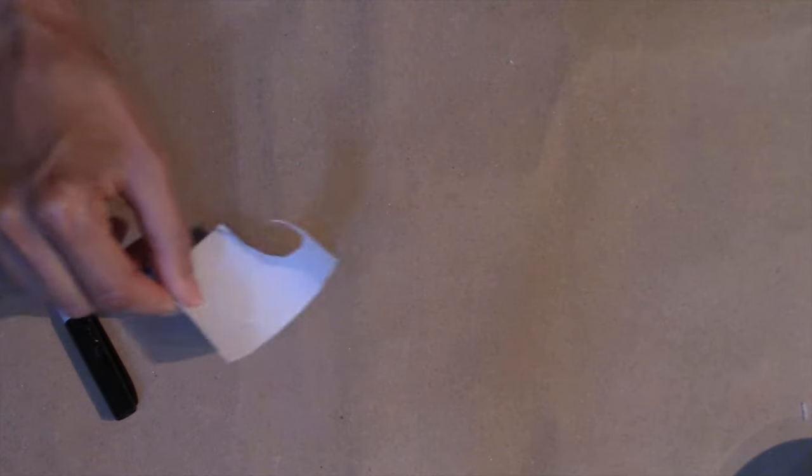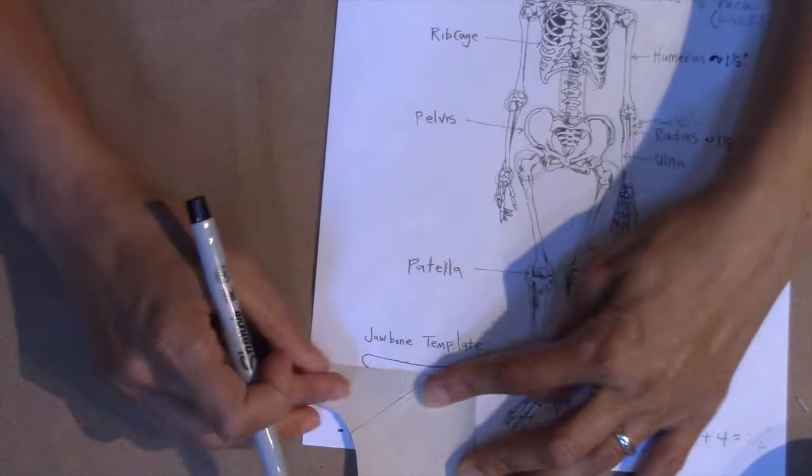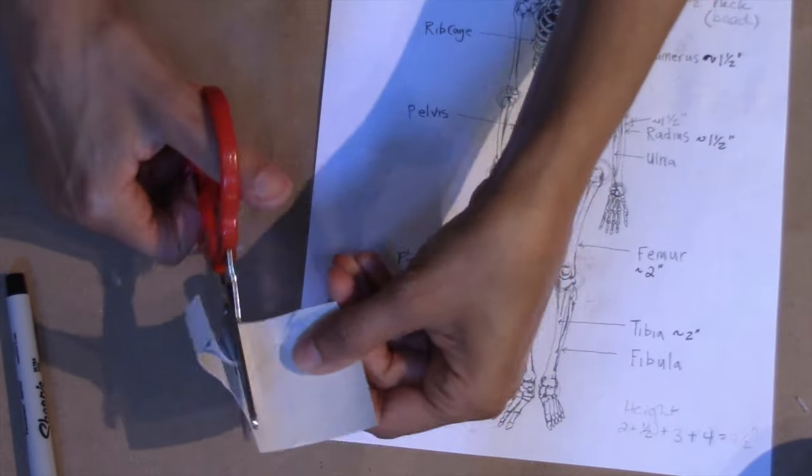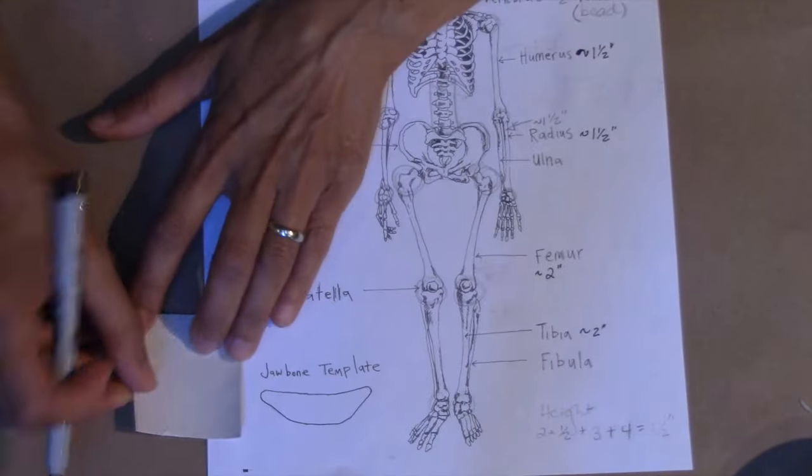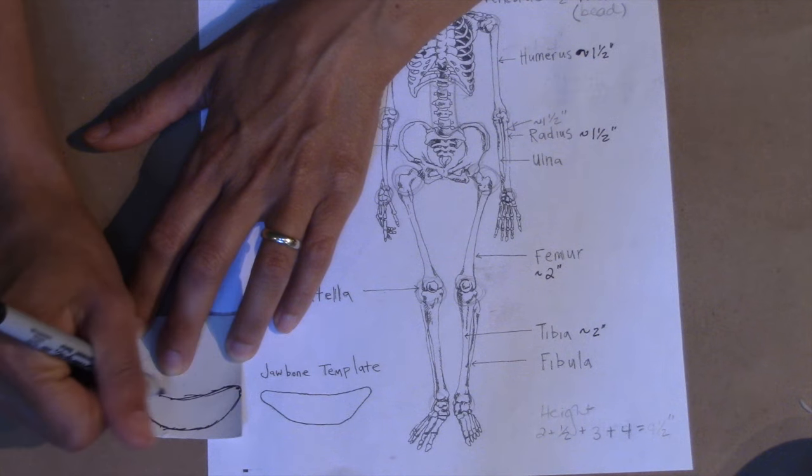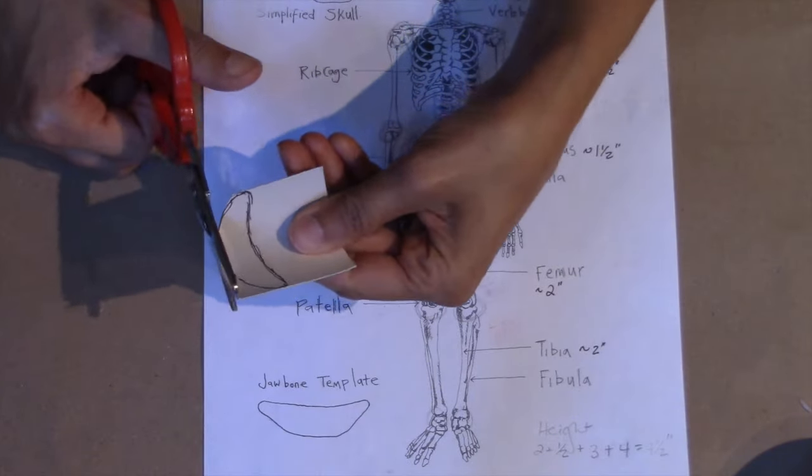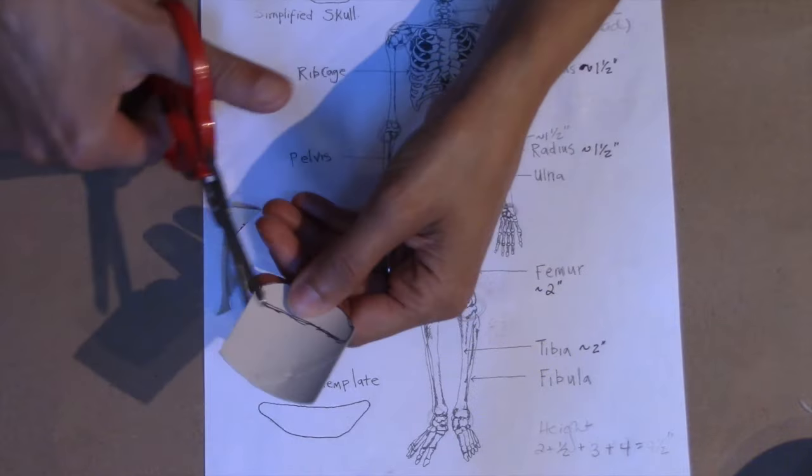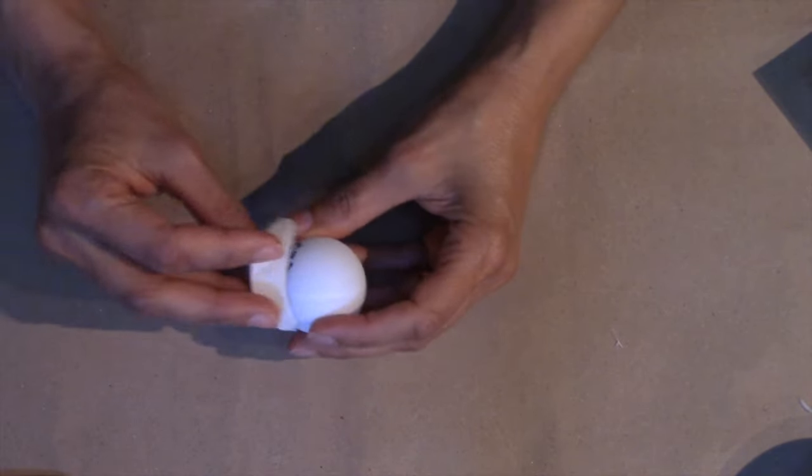For the head I'm using a ping pong ball and a piece of cardboard for the jawbone. If you're making a regular marionette you can skip the jawbone and just use the ping pong ball or use a large wooden bead or maybe even an empty eggshell that's been coated with varnish. I have a video that shows you how to prepare an eggshell that I will link in the description. Just like we did with the pelvic bone, you'll want to sketch the jawbone shape onto a piece of cardboard tube and cut it out. Then glue it onto the ping pong ball.